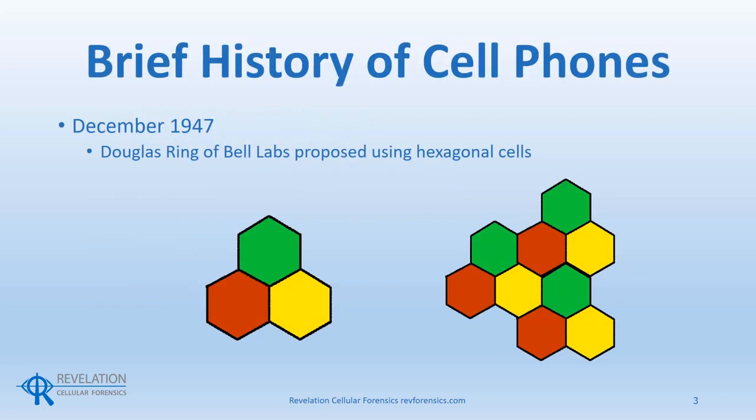A brief history. In 1947, Douglas Ring of Bell Labs proposed the use of a wireless network based on antennas covering hexagonal cells. A single antenna would cover three cells. Notice the image on the left with the red, green, and yellow hexagons. Each of the three hexagonal cells would represent a sector, and the cell site or tower would be in the center. A network of cell sites would look like the image on the right.